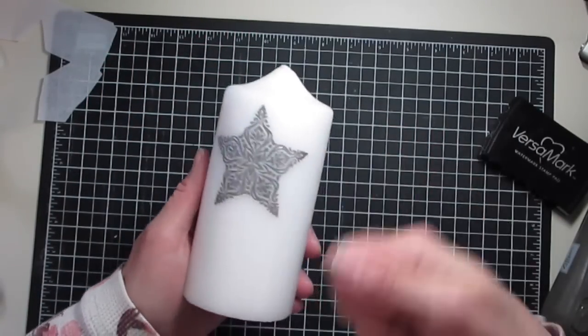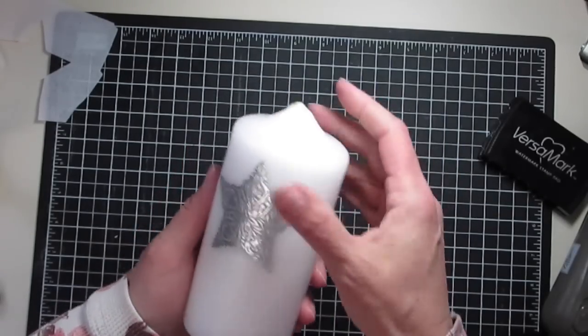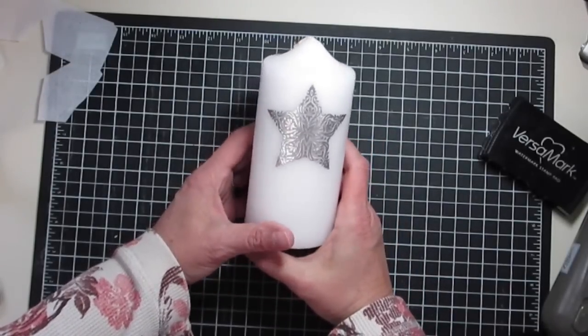You might have a few lumps and bumps, but you can take a warm spoon and just smooth them out if you like. I don't mind them. I kind of like the look of that. It just gives it a little more homemade look.